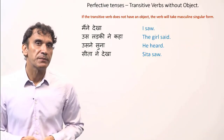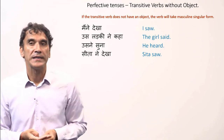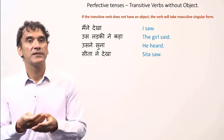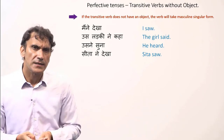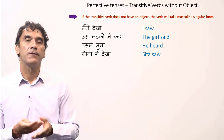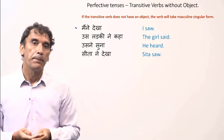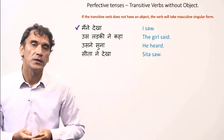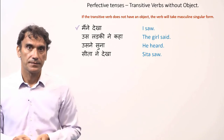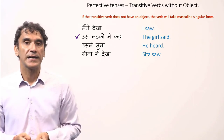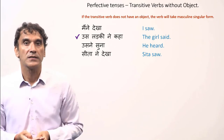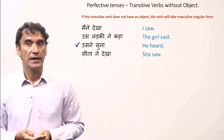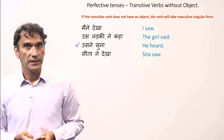There is one more thing to remember with perfective tenses. In the perfective tenses of the transitive verb, the object dictates the verb form in gender and number. But when the sentence does not have an object, the verb will take the masculine singular form. 'Maine dekha' — I saw. We don't know the object here, so it is masculine singular 'dekha'. Similarly, 'us ladki ne kaha' — the girl said. There is no object, so the verb is masculine singular 'kaha'. 'Usne suna' — he heard. Again, no object, so masculine form 'suna'.